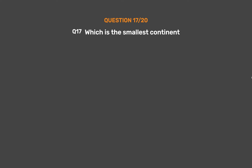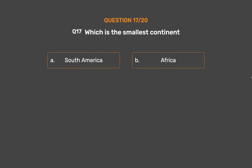Question Number 17. Which is the smallest continent? Option A: South America. Option B: Africa. Option C: Antarctica. Option D: Australia.